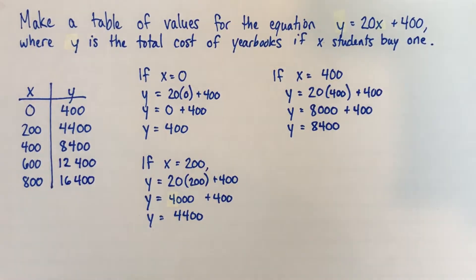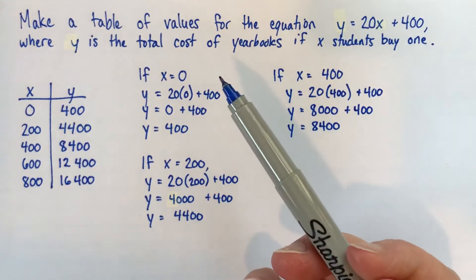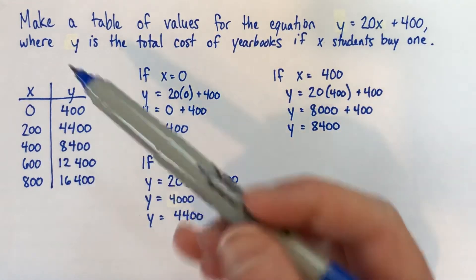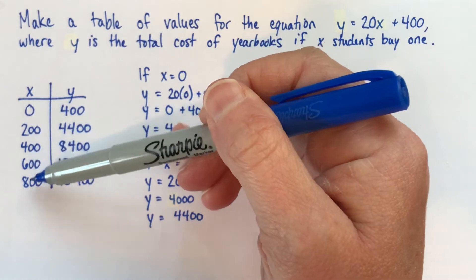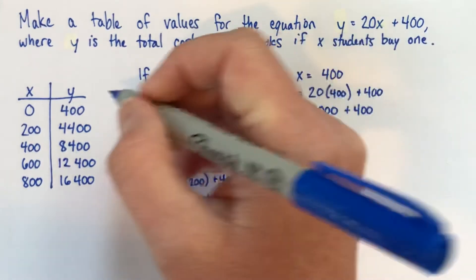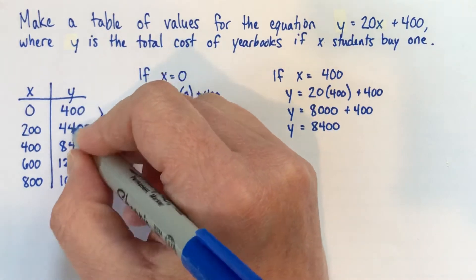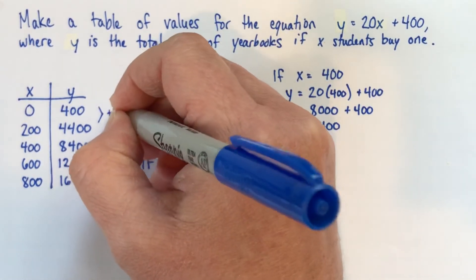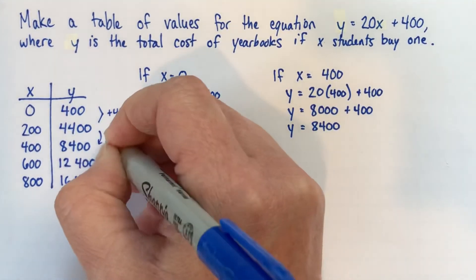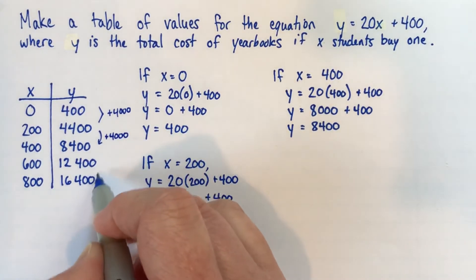I just want to point something out that you may have already noticed. If, for a very common kind of relationship called a linear relationship, which is probably what most people will be starting with when they're learning to make tables of values, if you made your x values go up by the same amount each time, so here we're going 200 more, 200 more, we're counting by 200s, then your y values should also go up by the same amount each time. So you can check like this. From 400 to 4,400 is plus 4,000, and here from 4,400 to 8,400 is also plus 4,000, and plus 4,000, and plus 4,000.